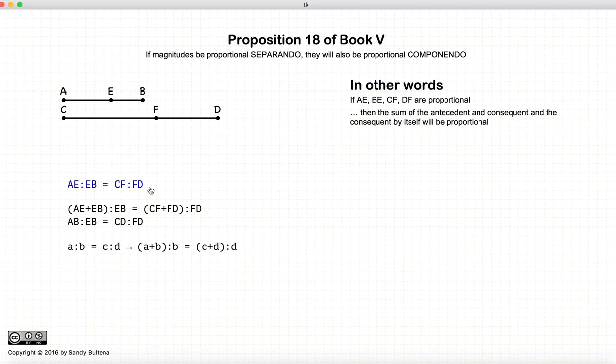And these two ratios are equal, then AB to EB will be equal to CD to DF. Or if we're just using simple letters to represent a magnitude, so one letter, one magnitude, I find it a bit easier to read.